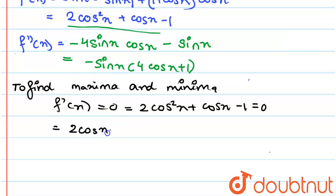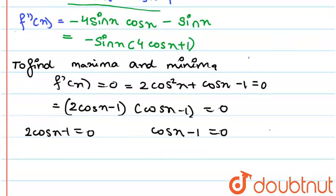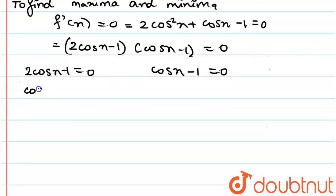So now (2cos(x) - 1) and (cos(x) + 1) = 0 in your brackets. So 2cos(x) - 1 = 0 and cos(x) + 1 = 0. This will give you the value of cos(x) as 1/2 and here cos(x) as -1.